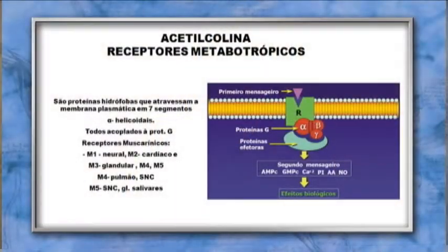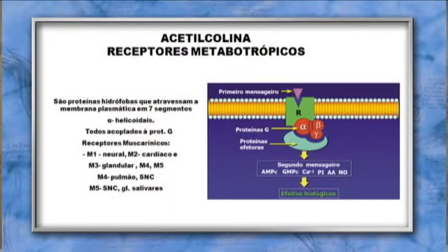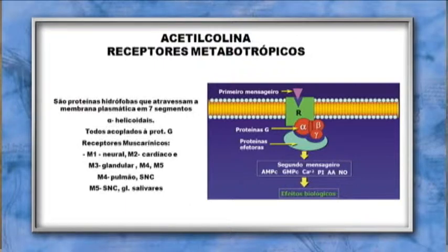A acetilcolina também pode combinar-se com receptores metabotrópicos. São proteínas hidrofóbicas que atravessam a membrana plasmática em sete segmentos (alfa-hélice). Caracterizam-se por ligar-se à proteína G e gerar um segundo mensageiro — que pode ser AMPc, GMPc ou cálcio — produzindo então o efeito biológico.